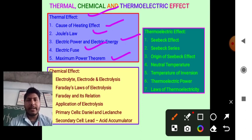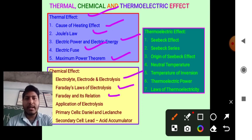The chemical effect of electric current can be explained by using Electrolyte, Electrode, Electrolysis, Faraday Law of Electrolysis, Faraday and its relation, Application of Electrolysis, Primary Cells like Daniel and Leclanche Cell, and Secondary Cells like Lead Acid Accumulator.